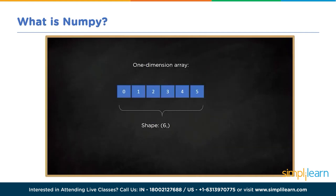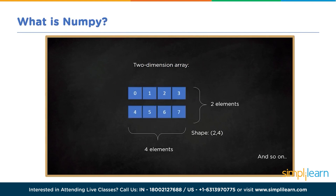Take a one-dimensional array — dimensions are also called axes, so you can say this is the first axis. With values 0, 1, 2, 3, 4, 5, it has a shape of 6 because there are six elements in the one-dimensional array, denoted as (6,). A two-dimensional array with values 0 through 7 has two axes and a shape of (2, 4). Shape is very important in mathematical functions and matrix work — we'll cover that more in part two.